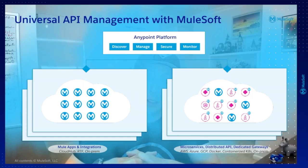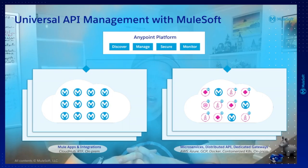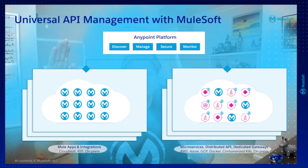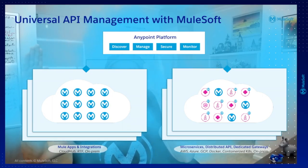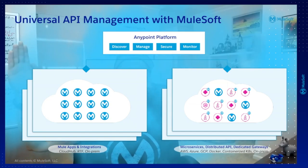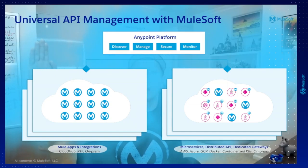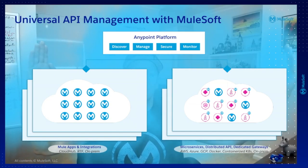These are capabilities that our competitors would dream to have right now — they are probably years behind having these type of capabilities. And basically, what we want to do with universal API management is to arrive to the market and not distinguish whether it's a Mule or a non-Mule API.